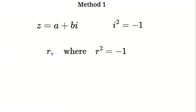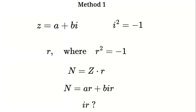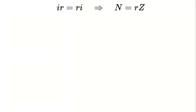So if we define our new number — let's call it n — as the product of z and r, where z is our complex number a plus b times i, then n becomes a times r plus b times i times r. Now what is i times r? If we assume that i and r commute — that is, i times r equals r times i — then n just becomes r times the original complex number z. That would be kind of boring; it's just a scaled version of r. Nothing new is happening.